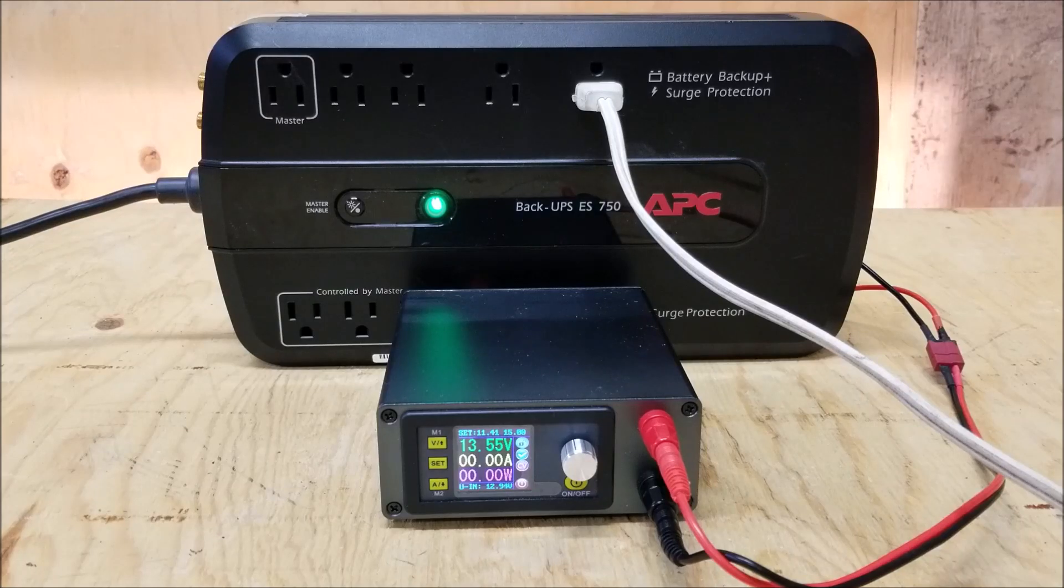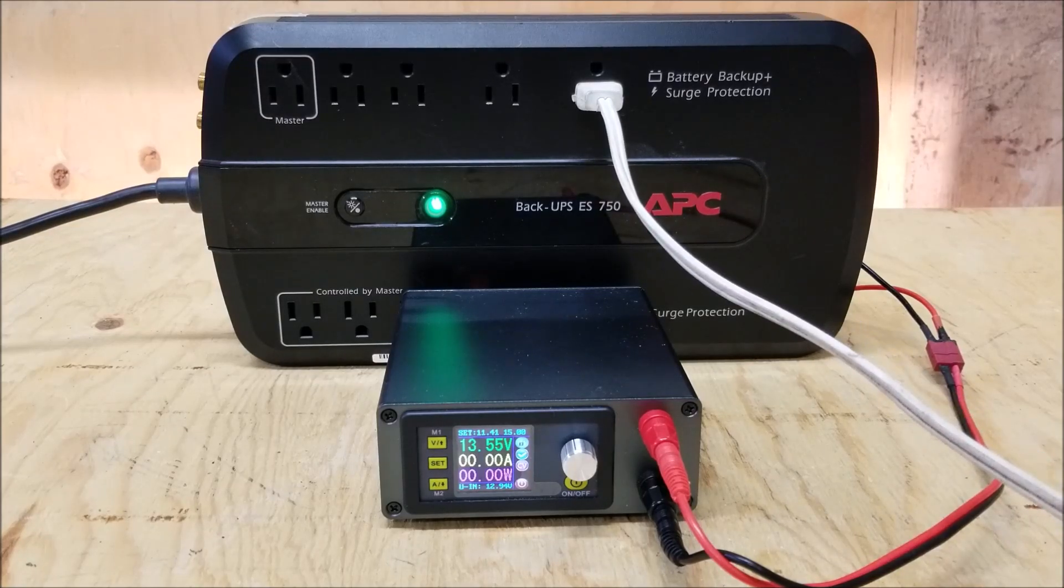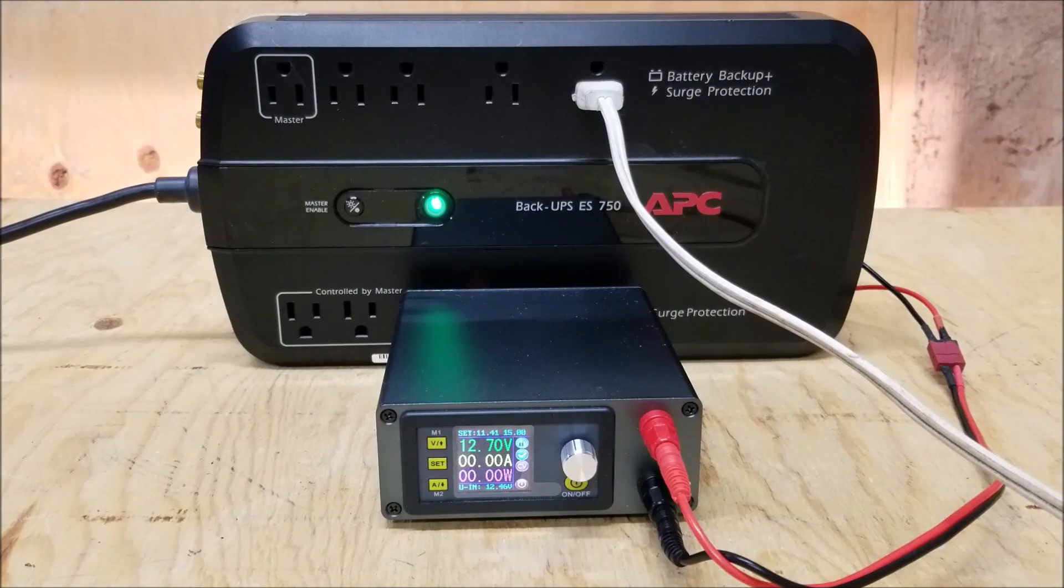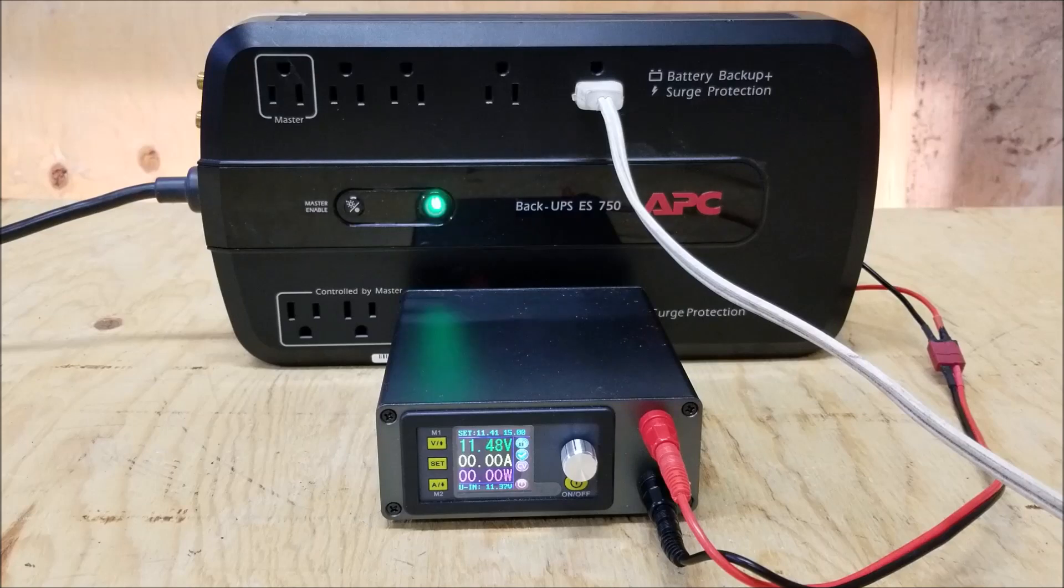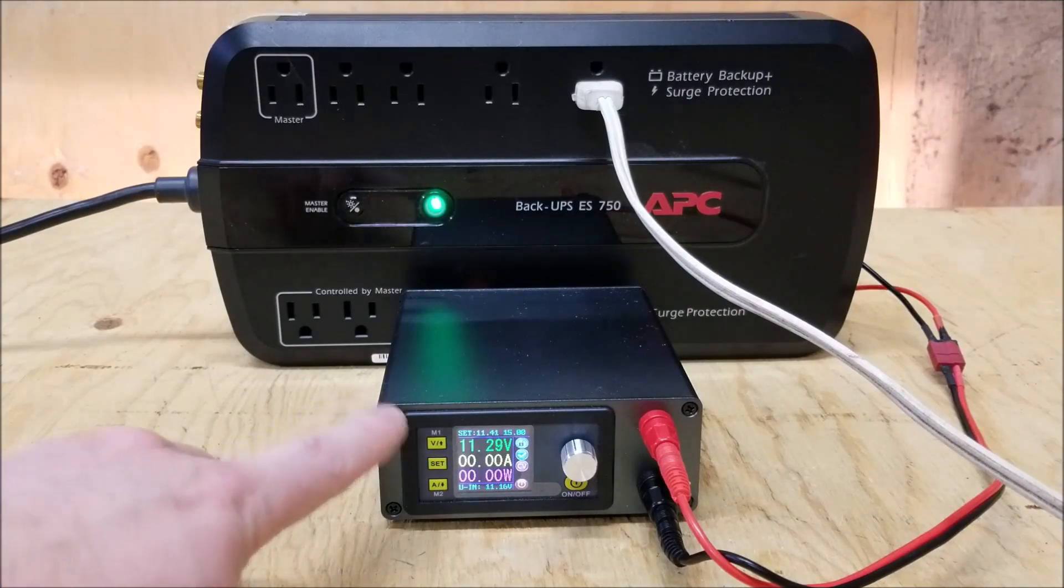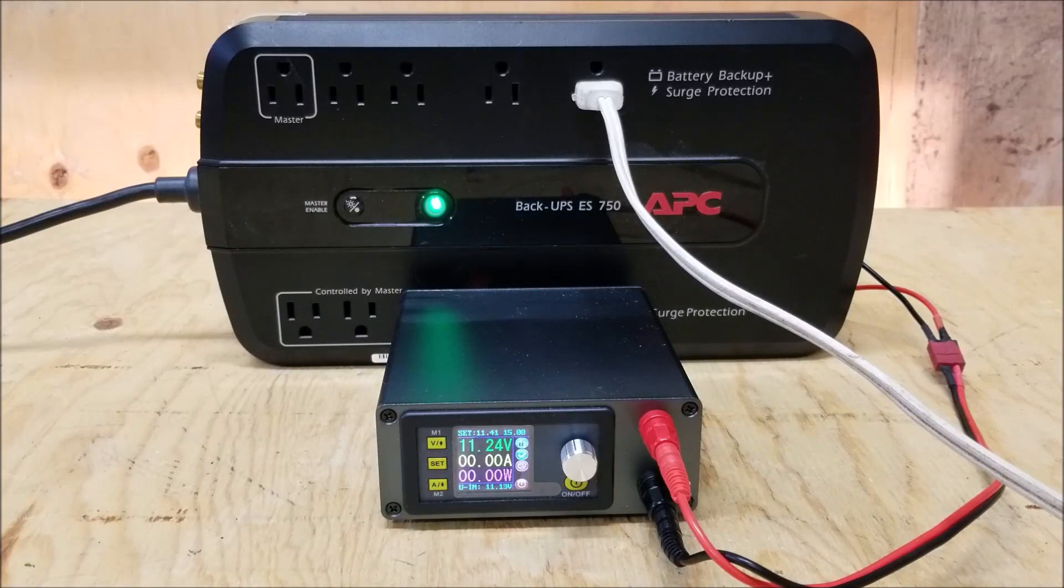So currently there is a light bulb connected to the battery plugs and I will now unplug the UPS and let's see what happens to the voltage of the battery. As you can see the voltage here is quickly dropping and let's see how low it gets.